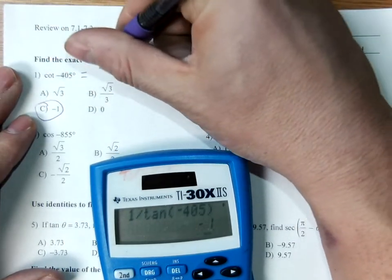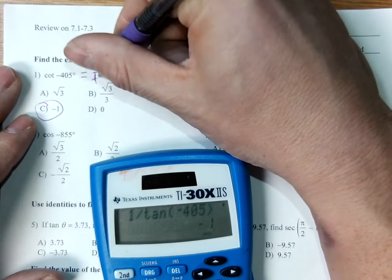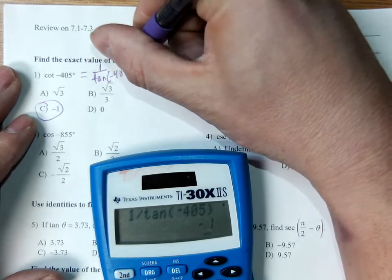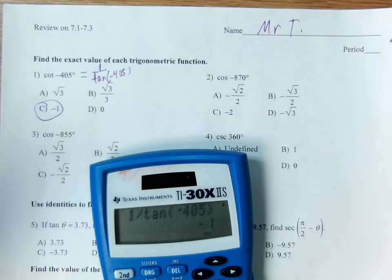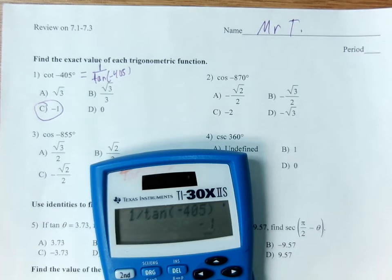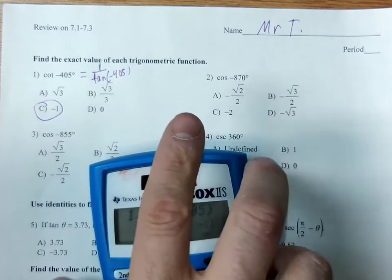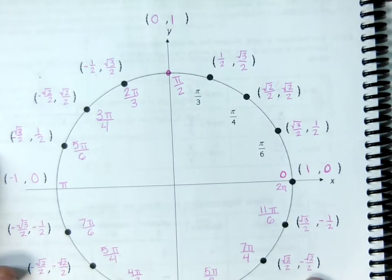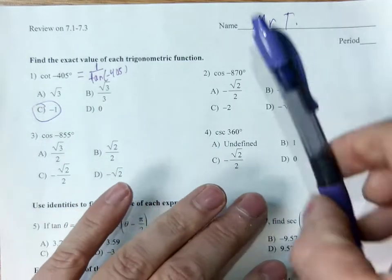So again, what I did there is I did 1 divided by tangent of negative 405. Alternatively, I can look at the unit circle and use its values to assist me. Remember, tangent is sine over cosine. Next one: cosine of negative 870.